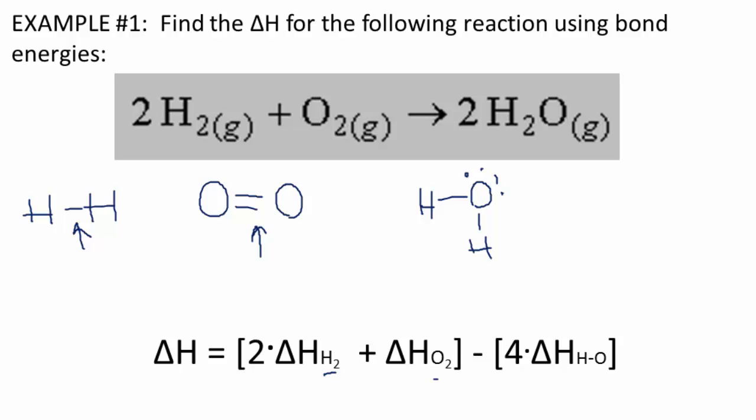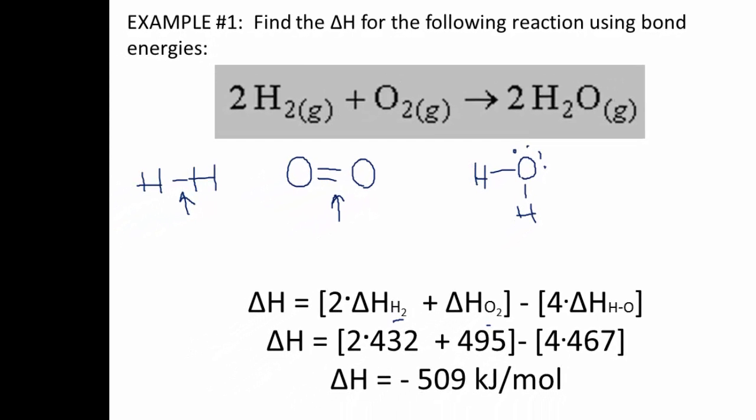So now what I'll need to do is plug in the numbers. So 2 times 432 plus 495. Notice that's a big value—that's a double bond for the oxygen. Minus a value for four times the value for the hydrogen and oxygen. And that should give you a negative 509 kilojoules per mole.